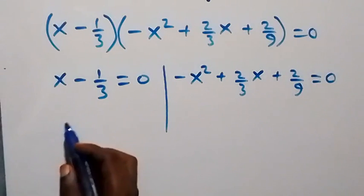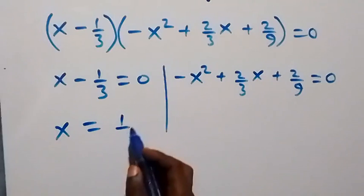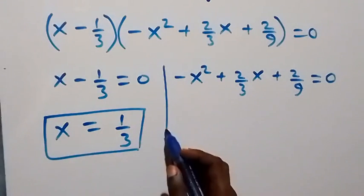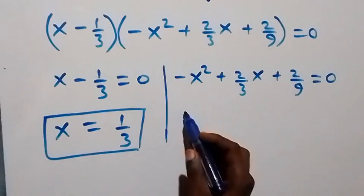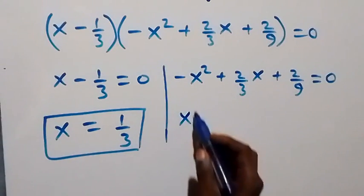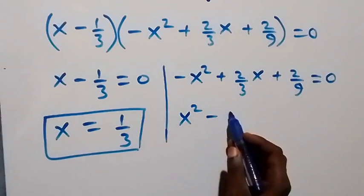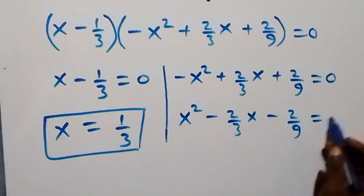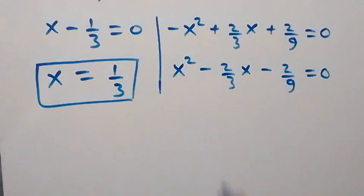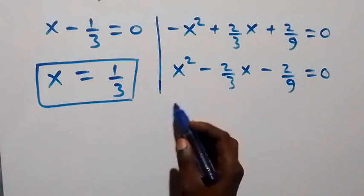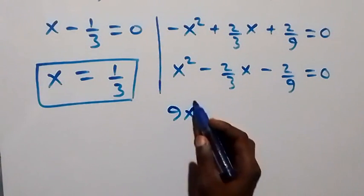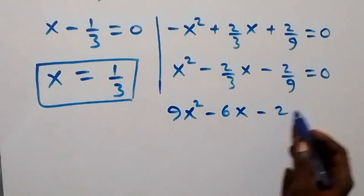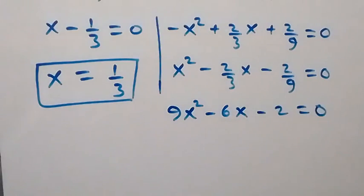When we solve the first case, we have x equals 1 over 3. For the second case, let's multiply through by minus 1, giving x squared minus 2 over 3 x minus 2 over 9 equals zero. We then clear the fraction by multiplying through by 9, so this becomes 9x squared minus 6x minus 2 equals zero.